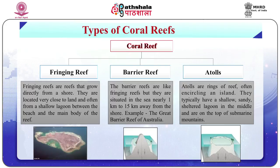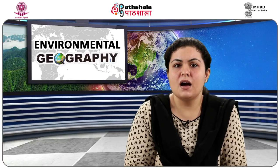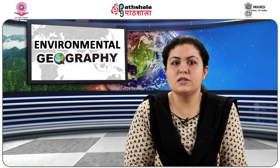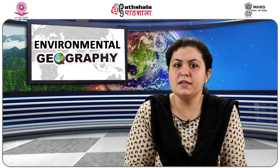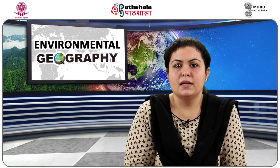Third are the atolls. Atolls are rings of reef often encircling an island of sand and coral rubble. They typically have a shallow, sandy, sheltered lagoon in the middle. Access to the open sea beyond is through a number of channels, which provide fresh water and colder water for the lagoons. Coral atolls are on top of submarine mountains — remnants of volcanoes. Once, there were fringing reefs around the volcano. As it slowly submerged, the corals continued to grow up to the surface of the water. What remained after the volcano became invisible is a ring of coral reefs surrounded by deep oceans.